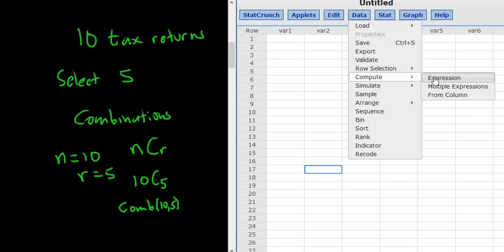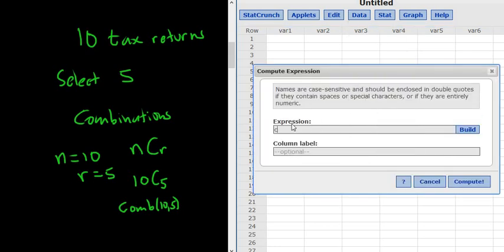Then you left click that. Then just type it in. Comb. It's always the bigger number first. 10. And don't forget the comma. So comma 5.